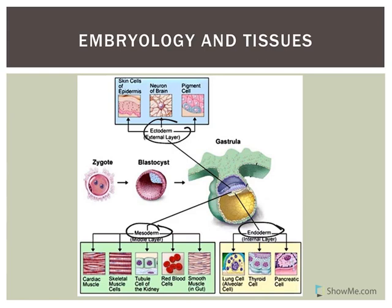For example, when discussing the pituitary gland, it is broken up into an anterior and posterior pituitary gland — they're actually two different tissues. The anterior pituitary gland is glandular, so it is epithelial tissue, versus the posterior pituitary gland, which is nervous tissue. They actually derive from different embryonic germ layers. Similarly, the outer adrenal cortex is glandular, while the inner adrenal medulla is actually nervous tissue.